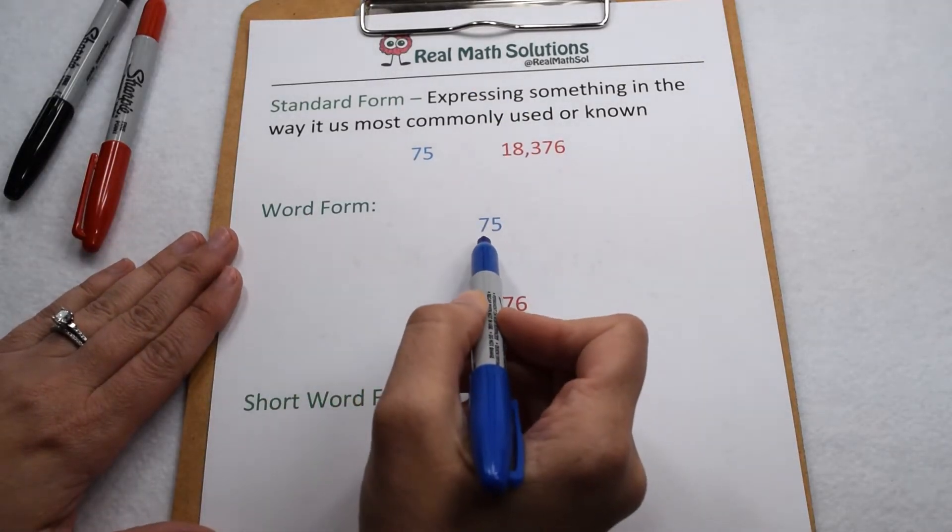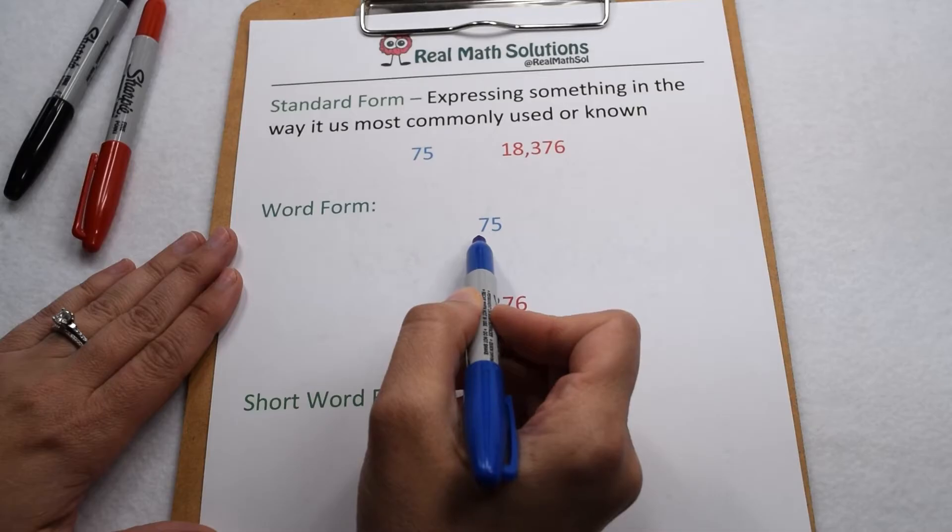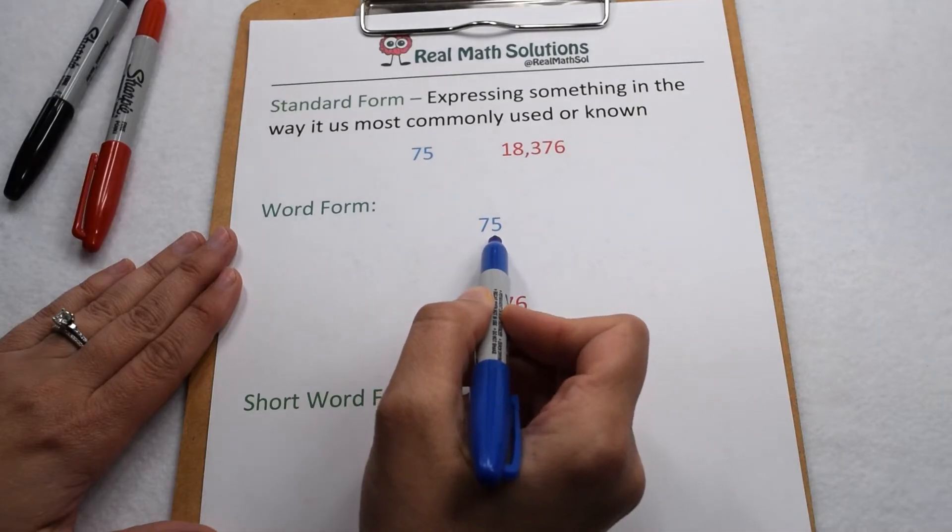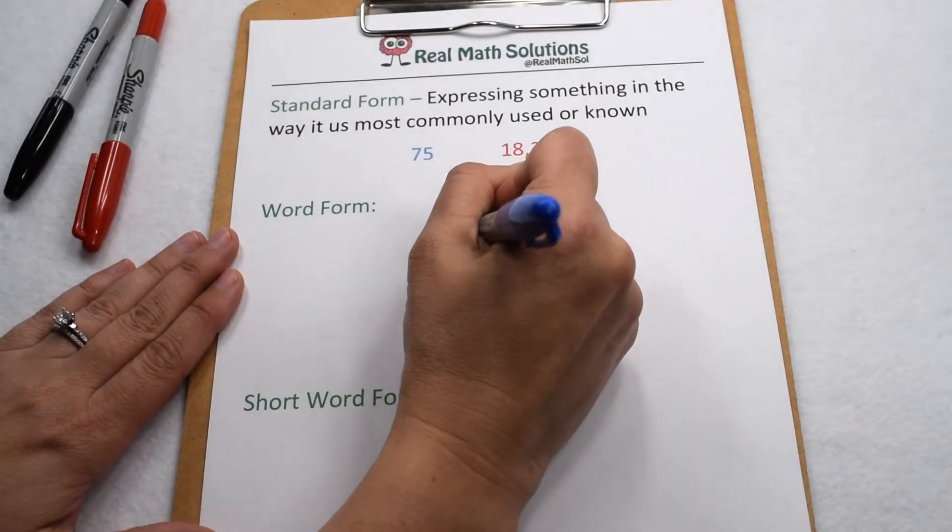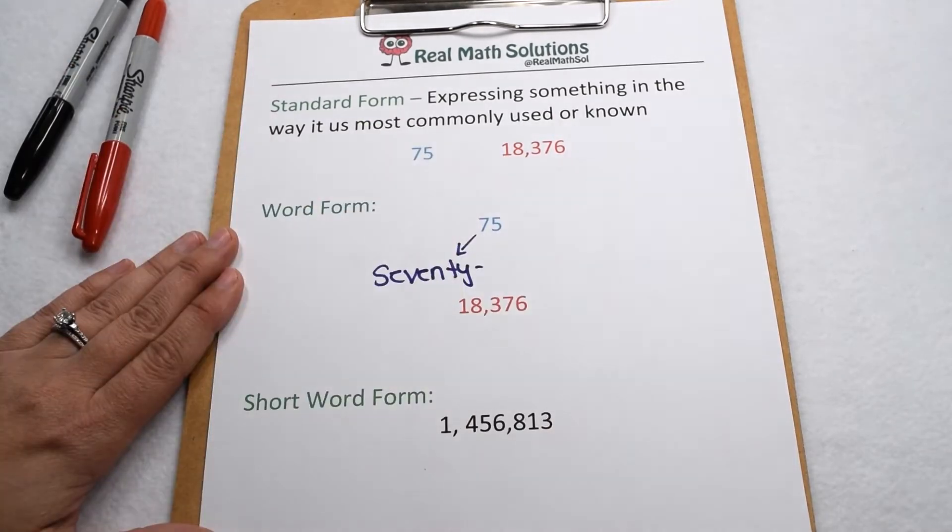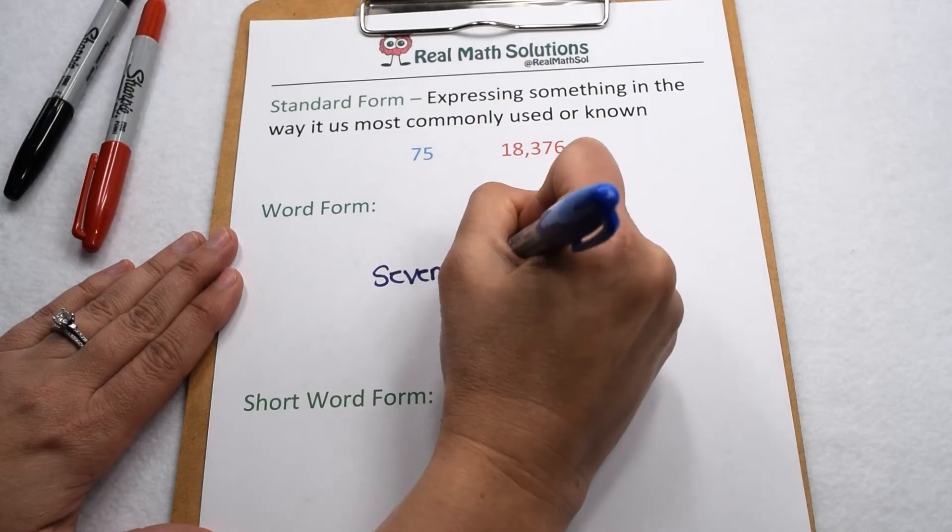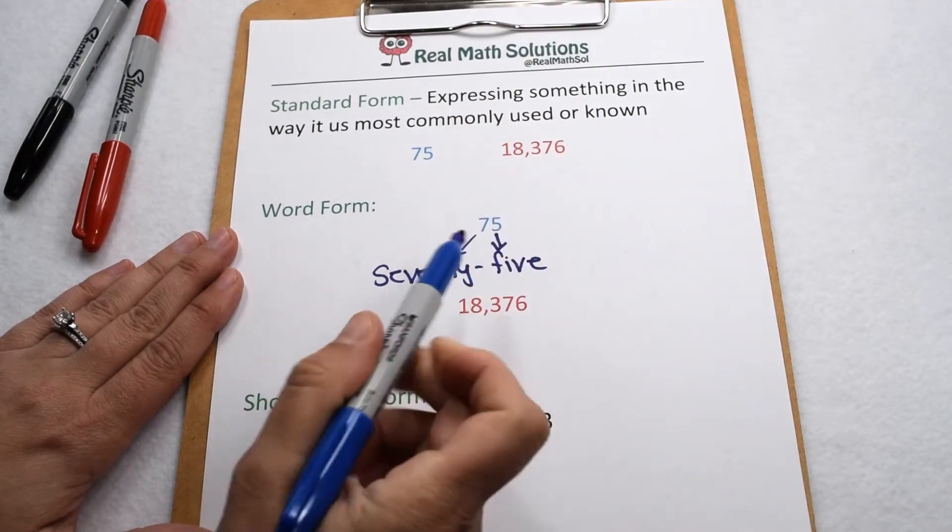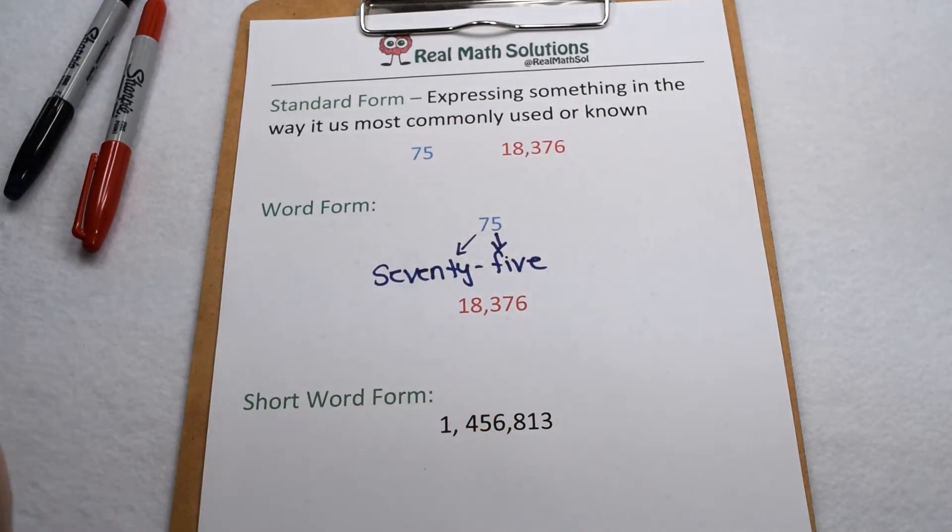When we go to read those numbers, we're then expressing them in word form. So in word form, this number would be 75. We can also write out word form on paper. The 7 is in the 10 spot, so it would be 70. The 5 is in the 1 spot, so it would be 5. So on paper, 75 in word form would look like this.